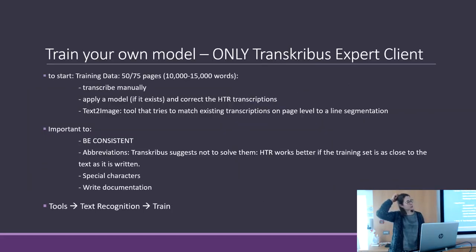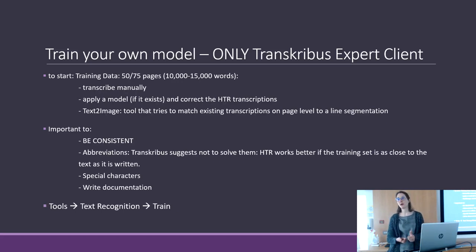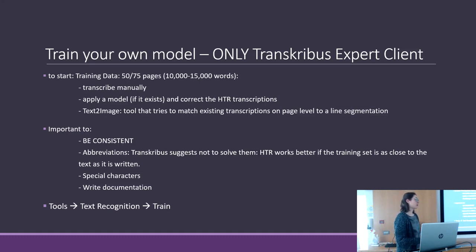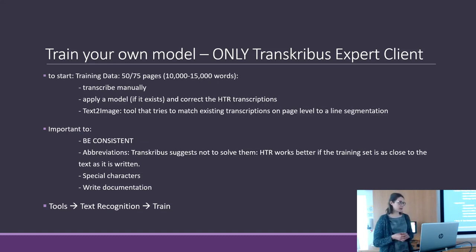Now we will see how to train your own model. There are two starting options: either a good public model is already available and you apply it, or it's not available or doesn't work well for your document, and you need to train your own model. To start, you need training data — 50 to 75 pages transcribed manually within Transcribus.